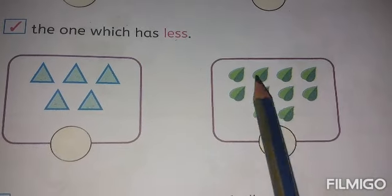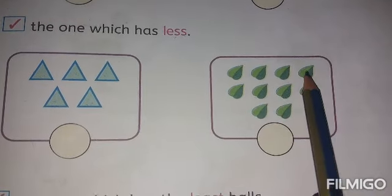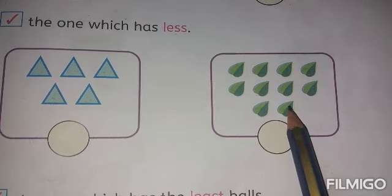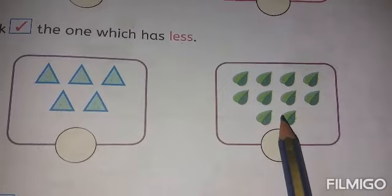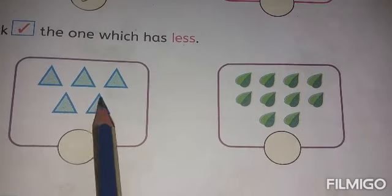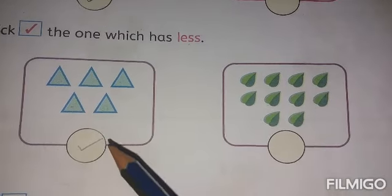And how many leaves are here? Let us see. 1, 2, 3, 4, 5, 6, 7, 8, 9, and 10. Which one is less, children? Leaves or triangles? Triangles are less. So put a tick mark.